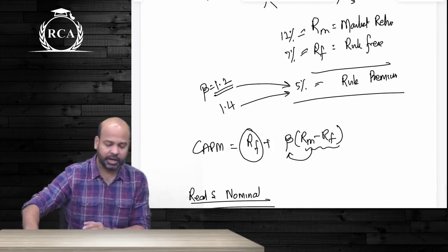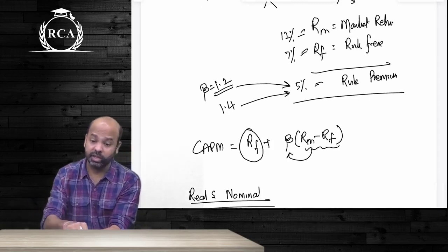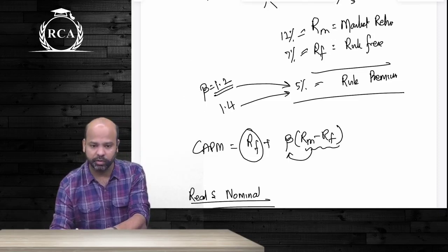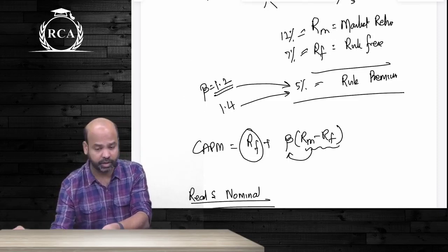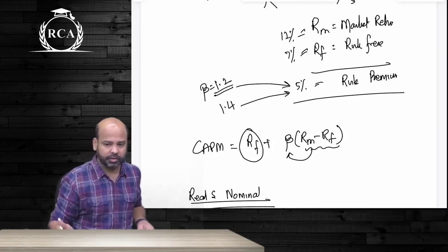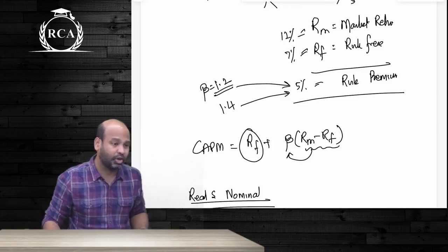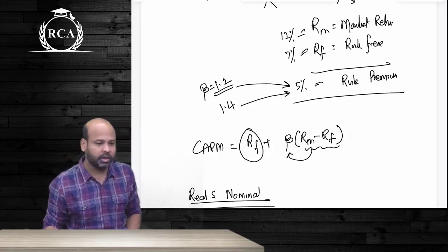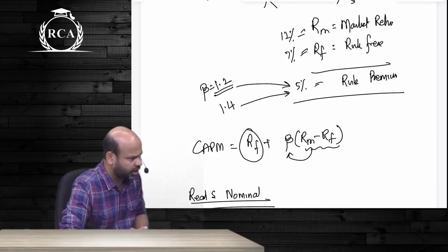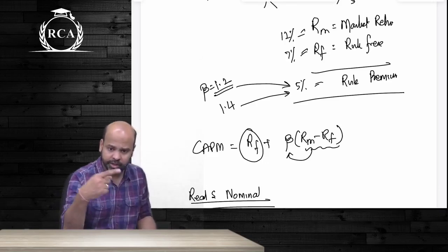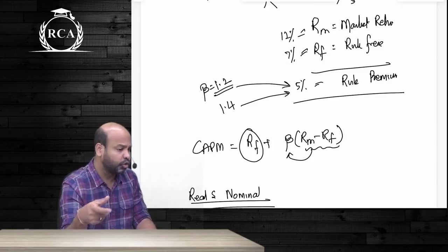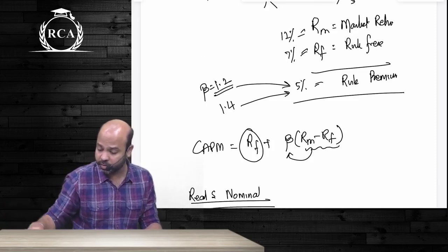Cash flows can either be real cash flows or nominal cash flows. Real cash flows are without the impact of inflation; nominal cash flows are with the impact of inflation. The value of an equity share should always be based on nominal cash flows and a nominal discounting rate. The profitability of an organization and beta will automatically incorporate all expected prices and inflation. That is why cash flows by default are nominal cash flows, and we use only those for the purpose of equity share valuation.